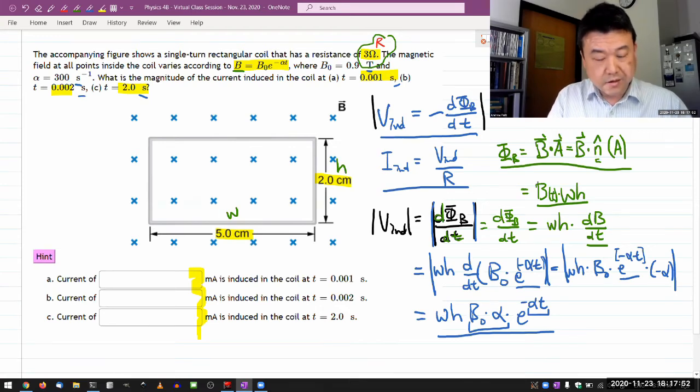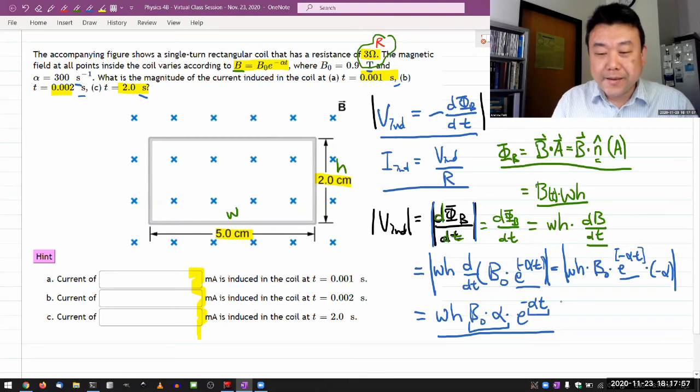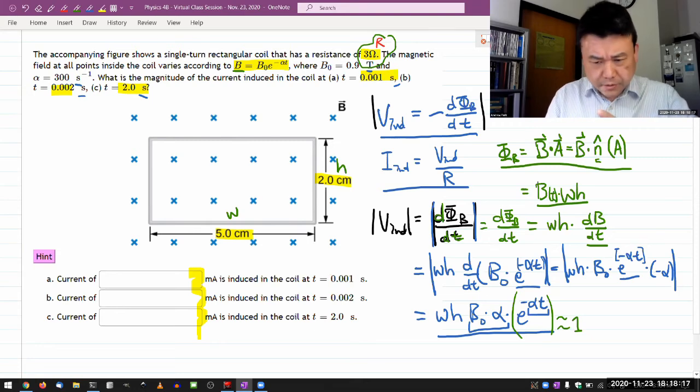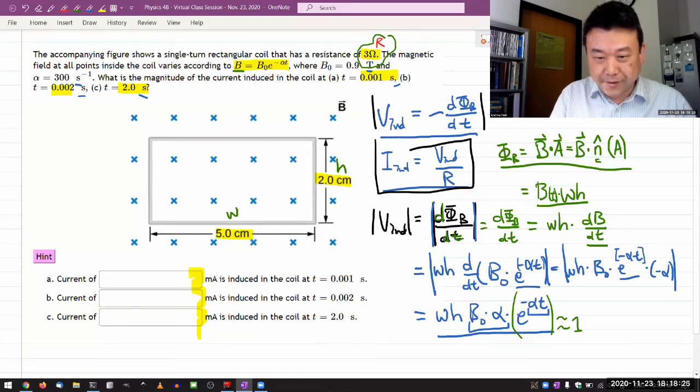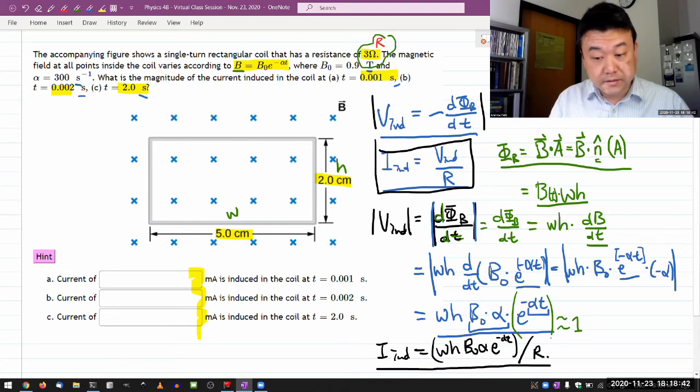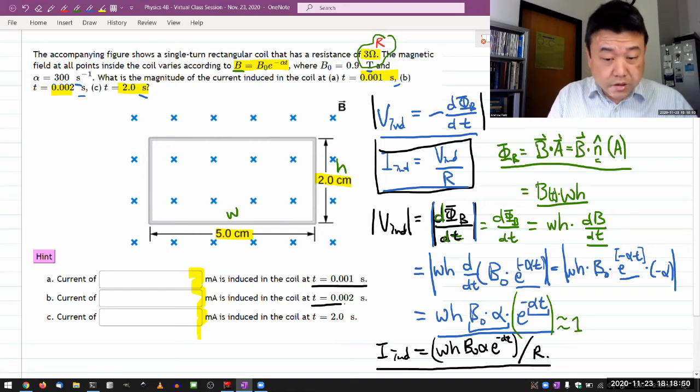That's it. Doing A, B, C, it's just a number exercise. I'll just tell you what to expect. So when t is very small, when t equals zero, then this quantity becomes approximately one. E raised to the power of zero is one. So when t is small, that's when this is actually going to be the largest. Wait, that's the voltage. For the current, you have to apply this formula. So for the current, you have to say that all this expression, WH B naught alpha e to the minus alpha t, divided by R. So at time equals zero is when this is the largest. So at t equals 0.001, it's going to be the largest there.